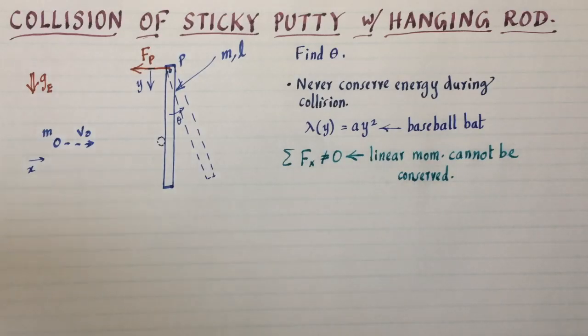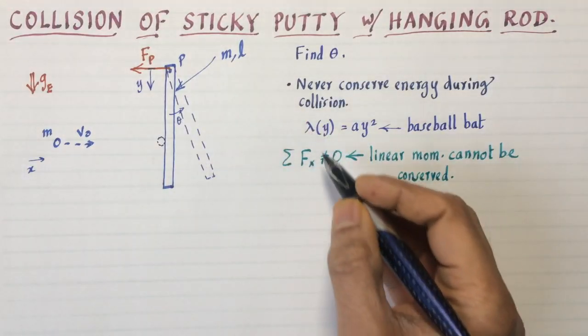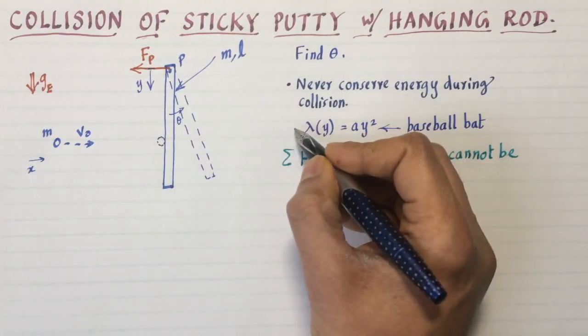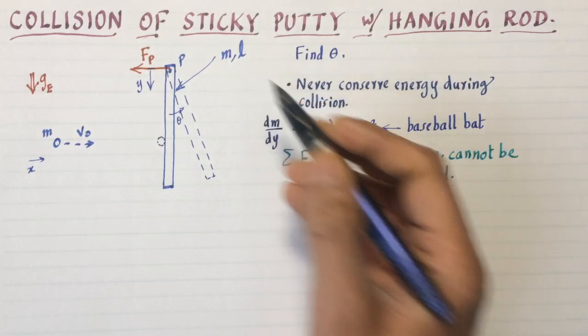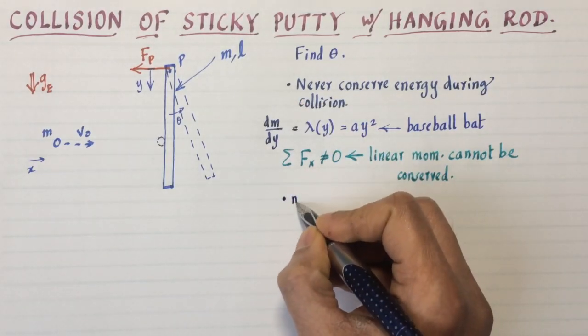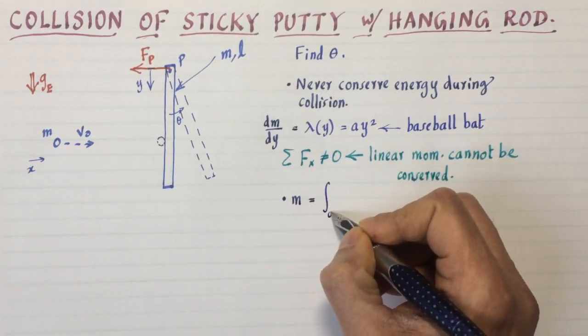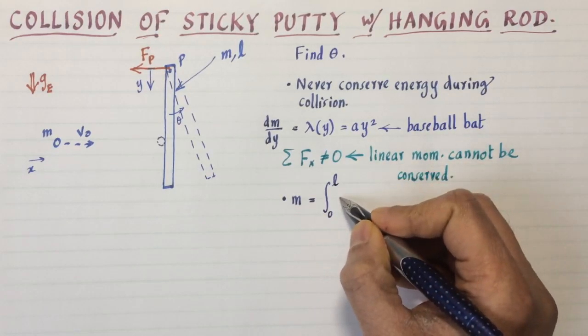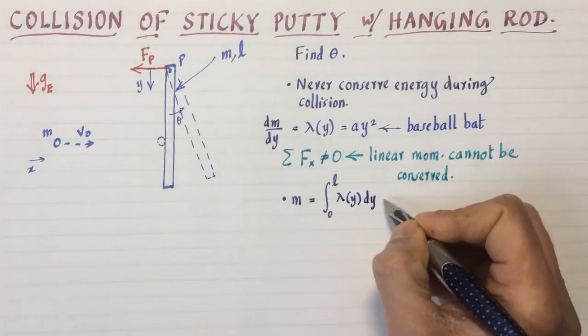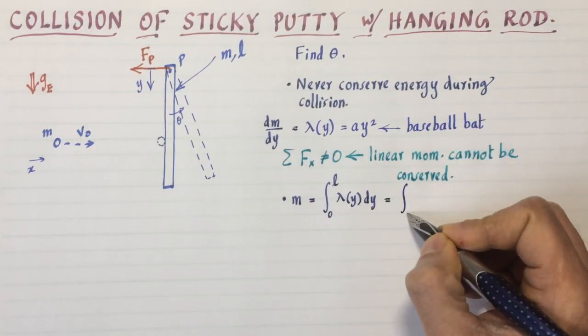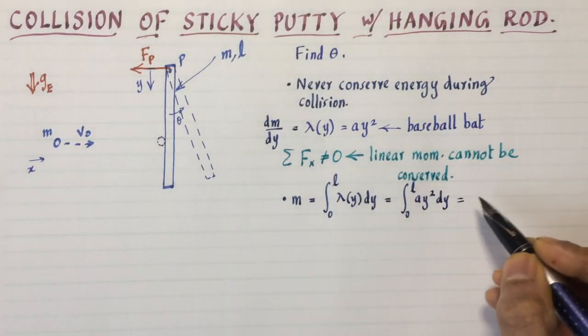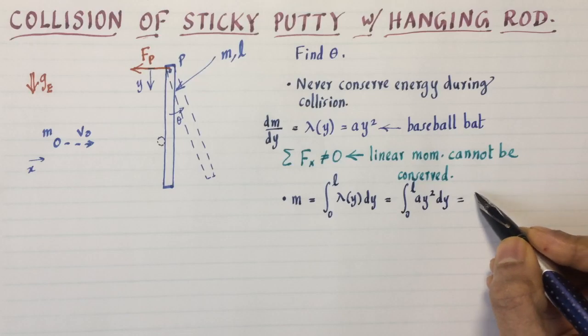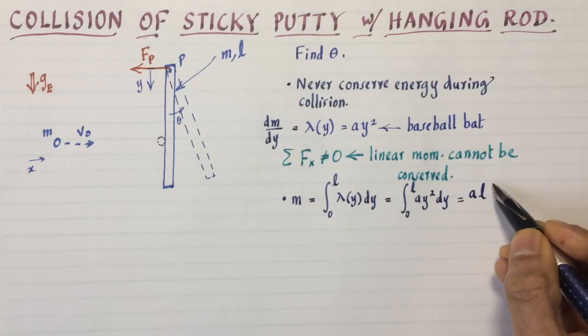Before we do angular momentum conservation, let's dispense with the technicalities. Lambda is dm by dy, so we can find the mass of the rod. It's the integral from 0 to L of lambda y dy, which is a y squared. Taking a outside and integrating y squared, I get y cubed over 3, so that's aL cubed over 3.